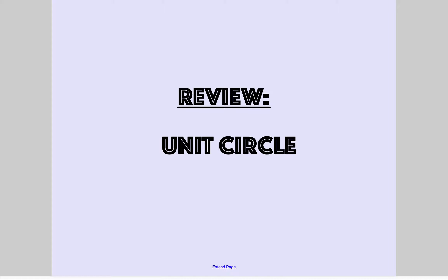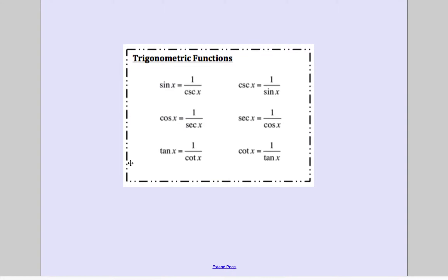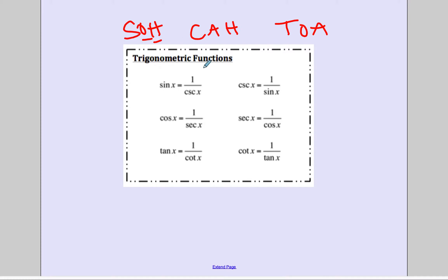Let's go ahead and get started. The trig functions — you should know all of them. We have sine, cosine, and tangent. If you remember from trig or even geometry, SOH-CAH-TOA: sine is your opposite over your hypotenuse, cosine is your adjacent over your hypotenuse, and tangent is your opposite over adjacent.